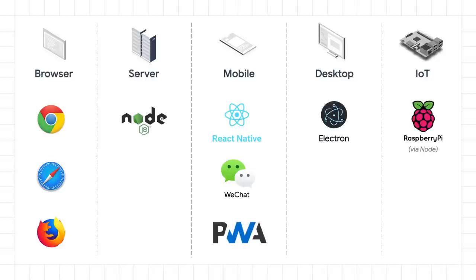On the browser stack, we've got modern web browsers. Server-side is driven by Node.js, React Native for mobile native apps, Electron for desktop native apps, and of course, Raspberry Pi for IoT. JavaScript is one of the only languages that can run across all of these devices without extra plugins being required, giving you the ability to deploy and run anywhere with one code base, and that's very powerful stuff.